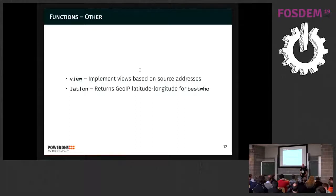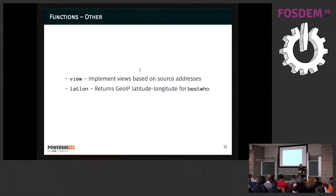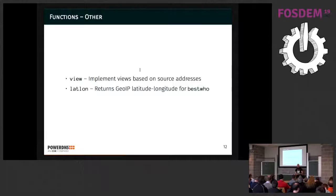There are some other functions. There is the view function, which is actually quite powerful because you can implement views based on source address, as BIND can do in its configuration — however, you now have it in your zone, so you can distribute it out to your slaves. And there is let-long, which returns GOIP latitude and longitude if we have it.